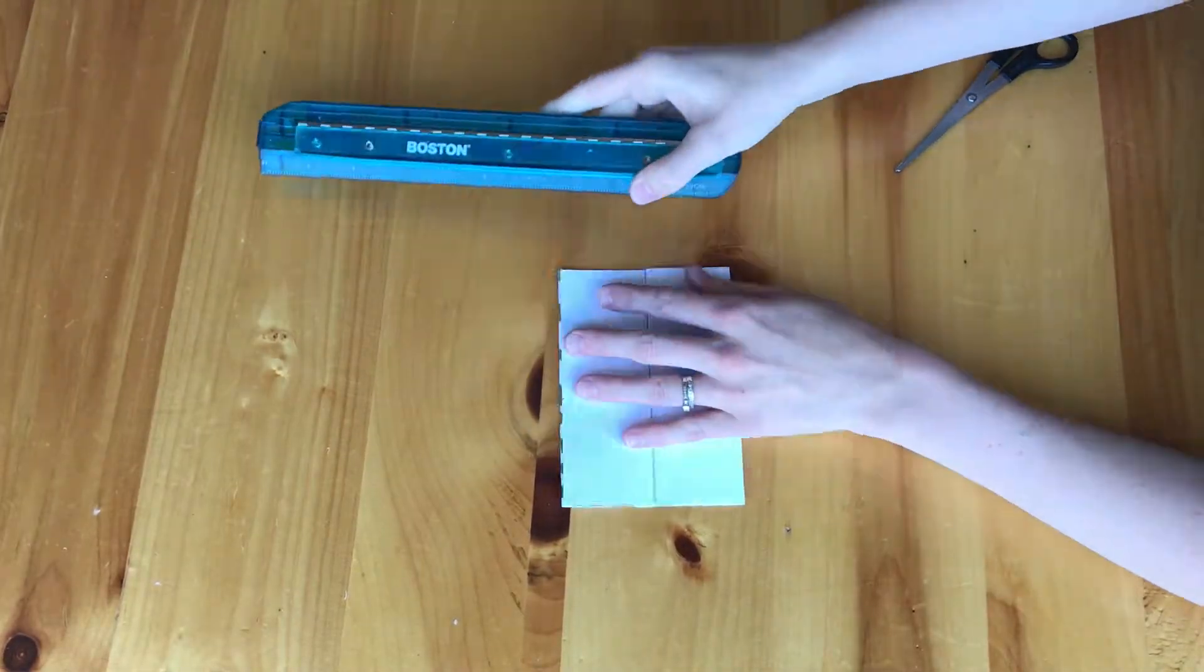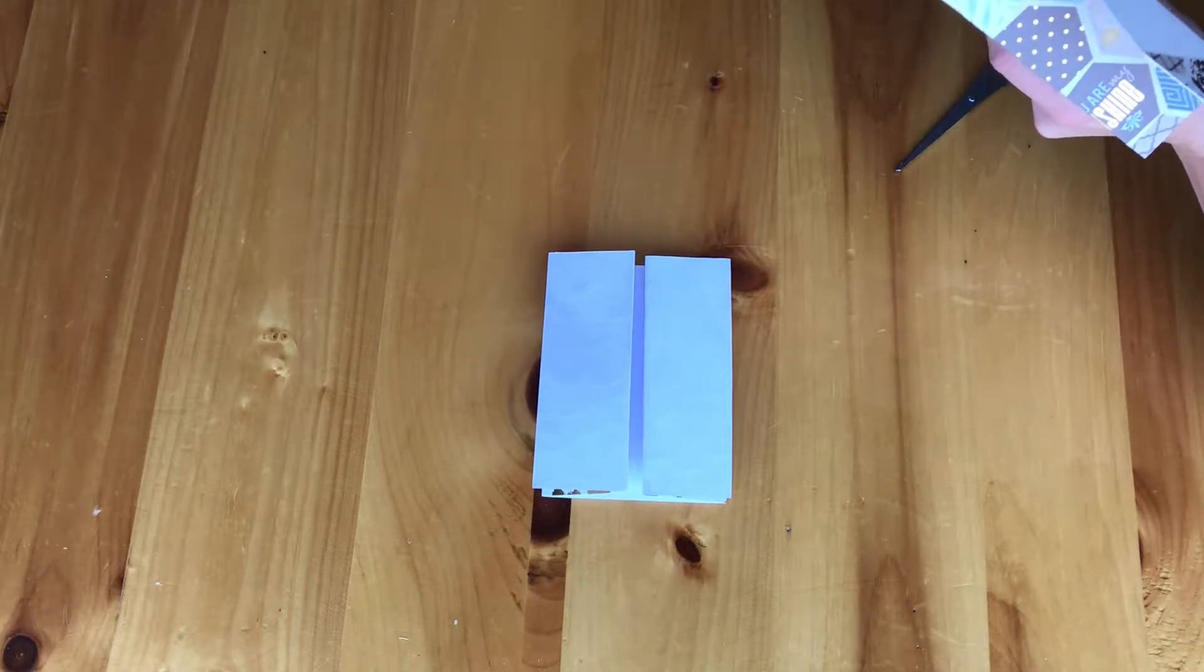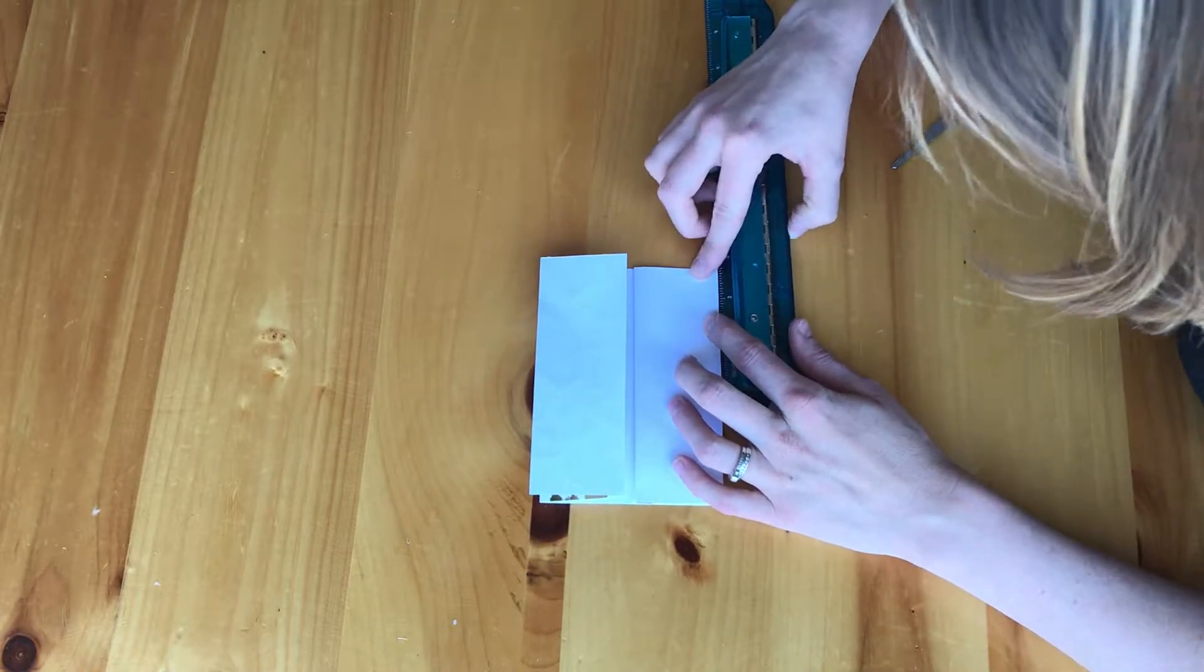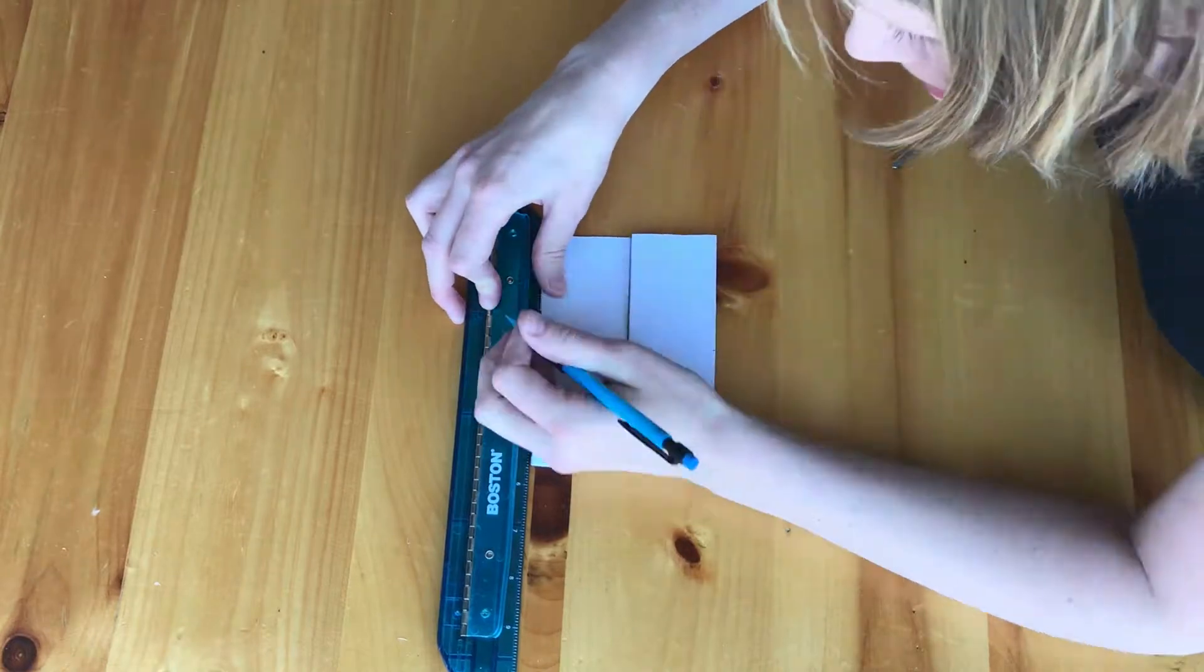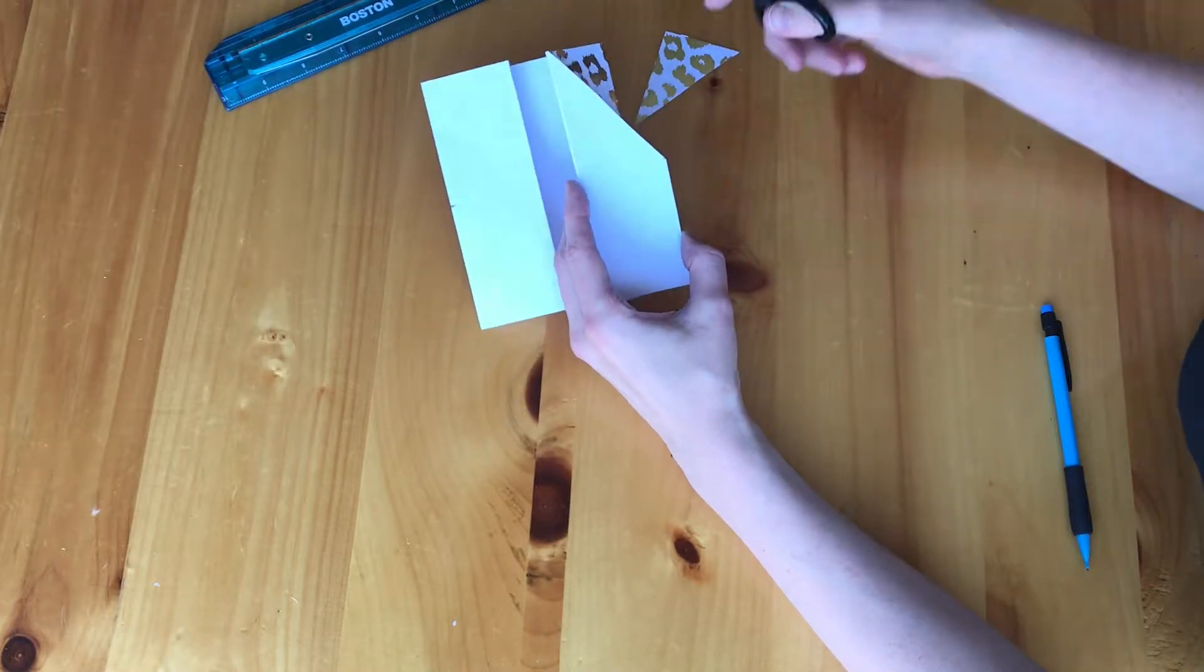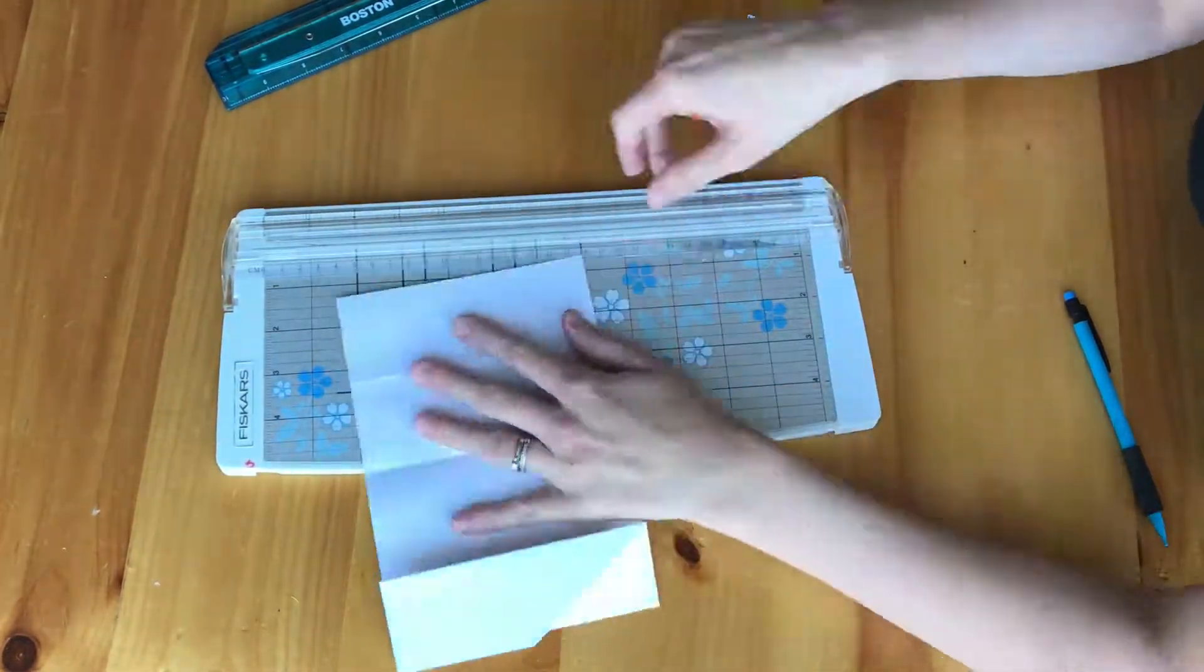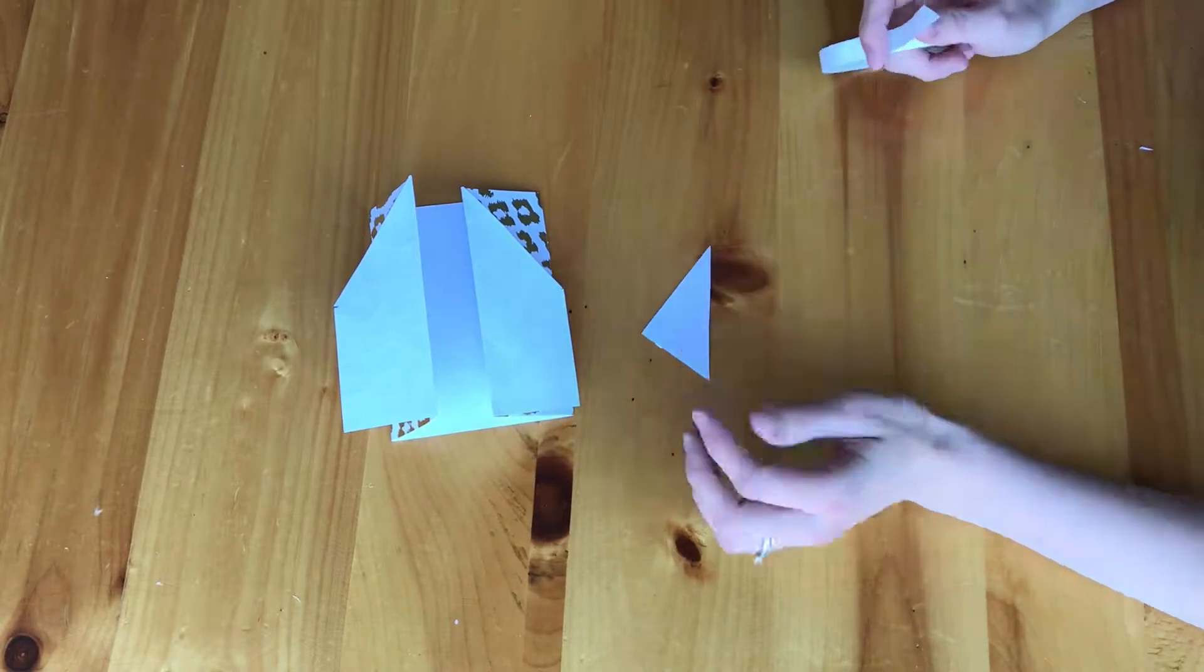Once you have it folded, then you're going to measure 2 and 3 quarter inches down the side of the card and you are going to put a little mark there and then you are going to cut that corner off. Once you have both corners cut off,